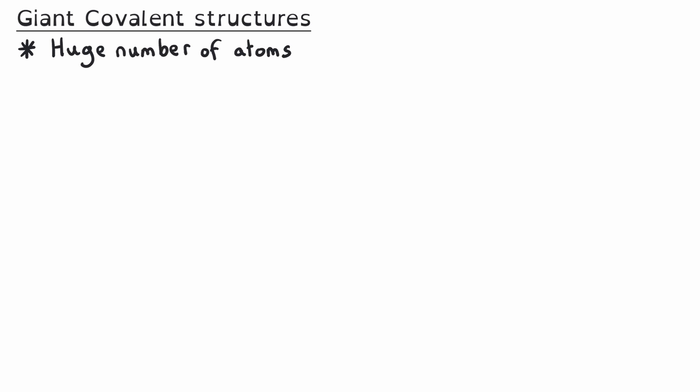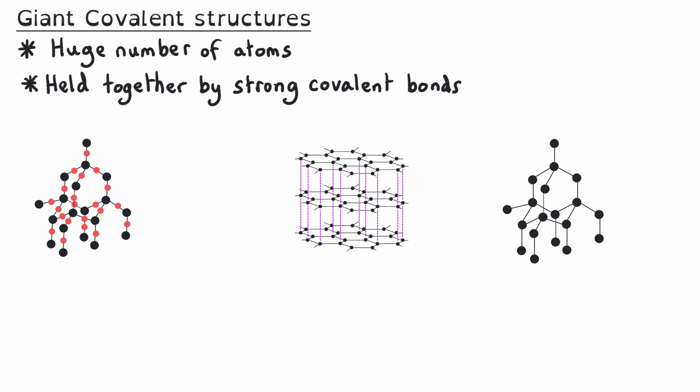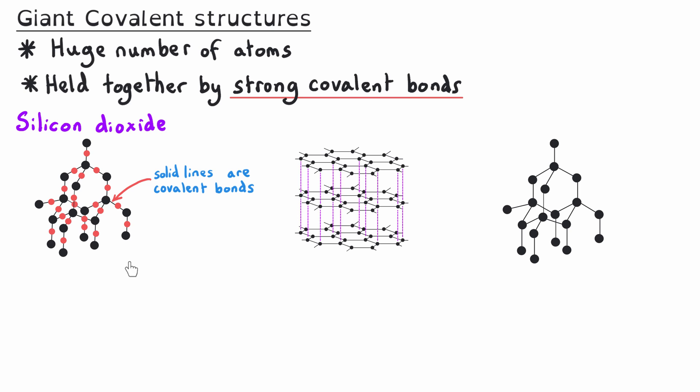Most of the structures of carbon are giant covalent structures, so I want to look at some general properties that they share before we look at individual examples. These are called giant structures because they're made up of a huge number of atoms, and they are giant covalent structures because those atoms are held together by a large number of strong covalent bonds. Examples include silicon dioxide, sometimes referred to as silica, which is the main component of sand and many rocks, and is the one giant covalent structure you need to know about that is not made from carbon.